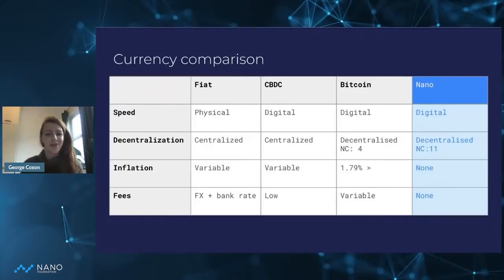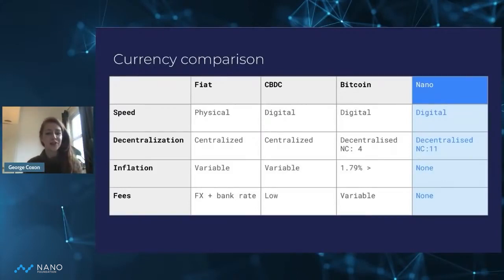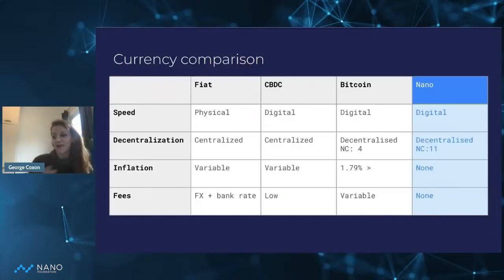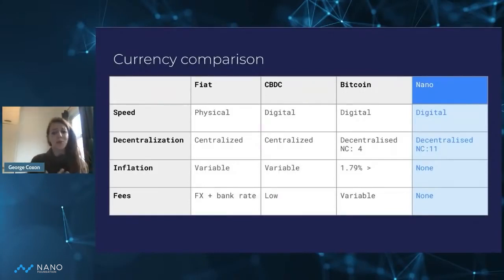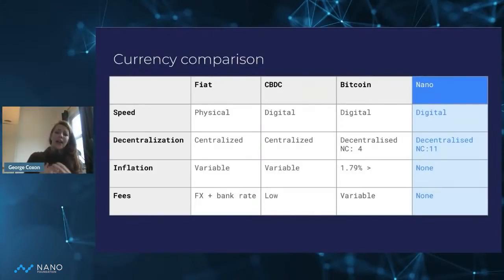We obviously have variations in inflation across the board here as well, with fiat and CBDC inflation being incredibly variable, as we're seeing across the world right now. Inflation in the US is up to 7.2%, and here in the UK we're nearly reaching 4.2% and plus. Bitcoin has a 1.79% increasing inflation, and Nano is a deflationary currency.